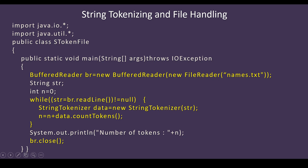data.countTokens() counts the number of tokens in that line. For example, if the first line has 5 words it returns 5. The second time the loop executes it goes to the second line — if that line has 3 words, countTokens() returns 3, which gets added to the previous 5. That is the reason you have written n = n + data.countTokens(). It keeps adding the number of tokens not just for one line but for the whole file, counting all tokens.